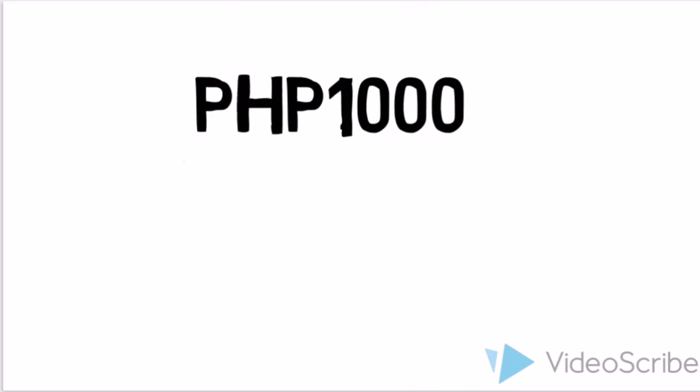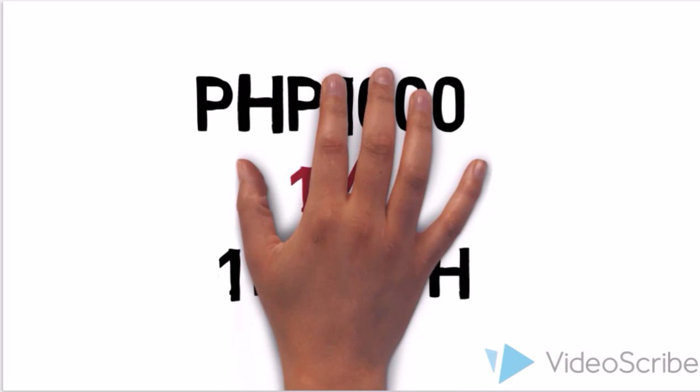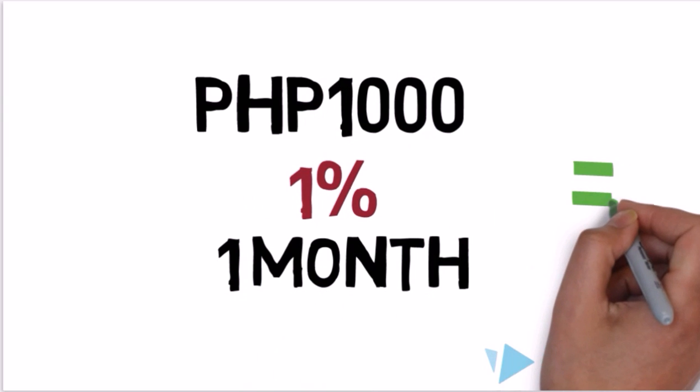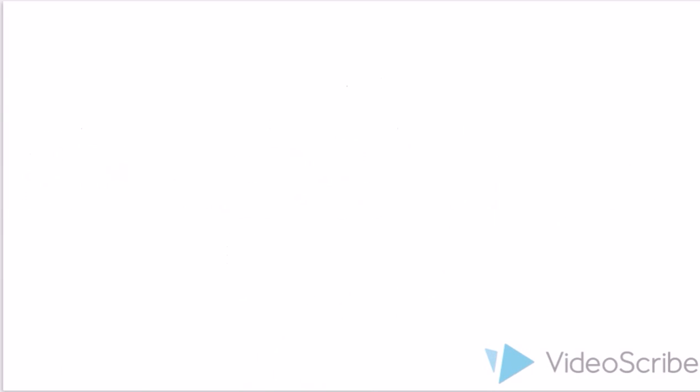If you borrow 1,000 pesos at an interest of 1% per month for one month, you will have to pay the amount that is equal to the principal multiplied by the rate multiplied by the term, which is 1,000 times 1% times 1, which is equal to 10 pesos.